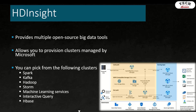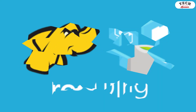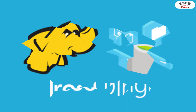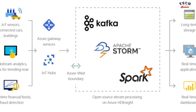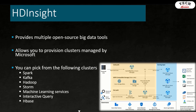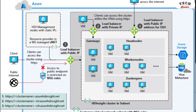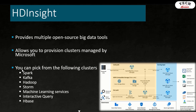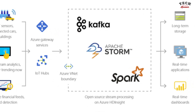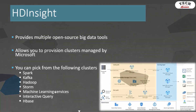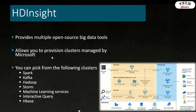Another big data service on Azure is HD Insight. HD Insight provides multiple open-source big data tools that you can choose from for your data transformation needs. It allows you to provision clusters, and those clusters are managed by Microsoft. The cool thing about HD Insight is that you have the ability to choose from different cluster technologies — you can use Spark, Kafka, machine learning services, and so on. Unlike Azure Databricks, which only allows you to use Apache Spark.